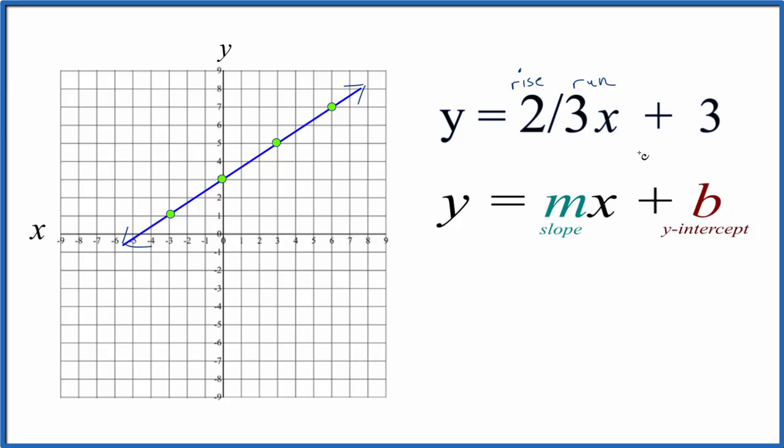Do note, you could put a value in for x, any value for x, and then when you find the value for y and you plot that x, y point, that'll be on the line here.